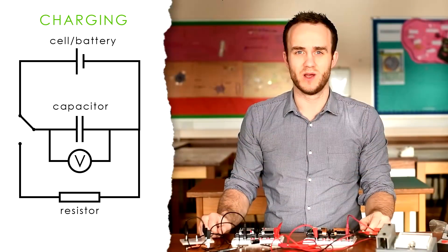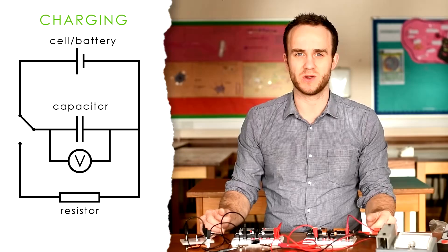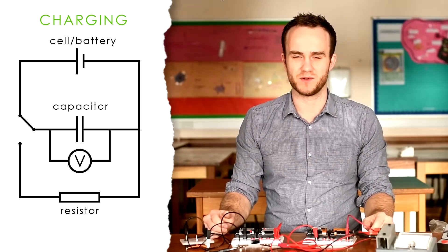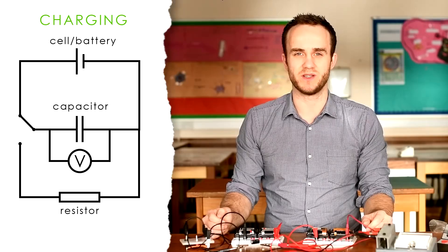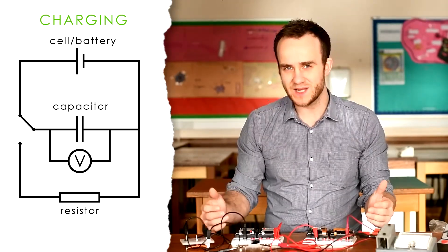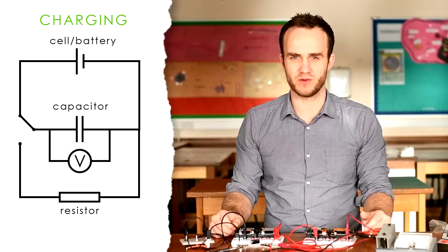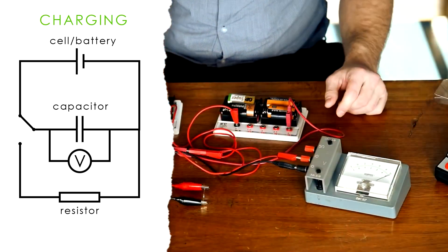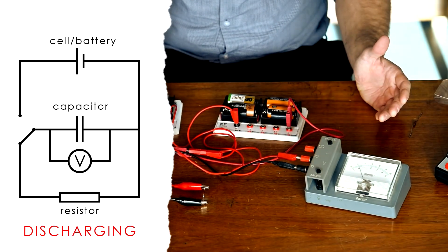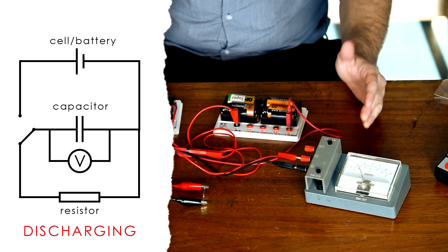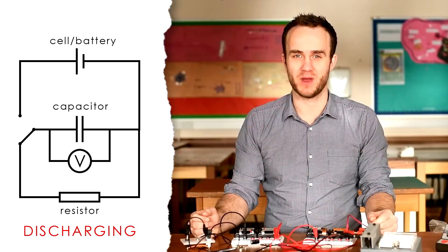When I flick my switch now, I'm going to be bypassing the battery. And now my capacitor is just going to be in series with the resistor, which means that charge is going to flow from one plate of the capacitor to the other through the resistor. Let's see what happens. Wow. So the PD decreased very quickly, too quickly for us to do any measurements.